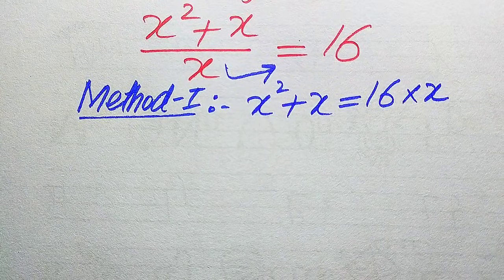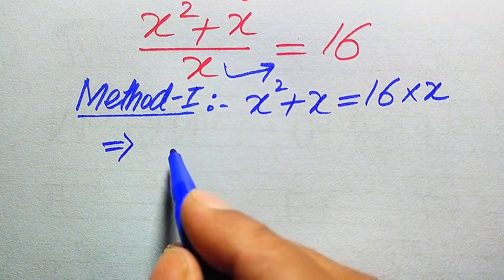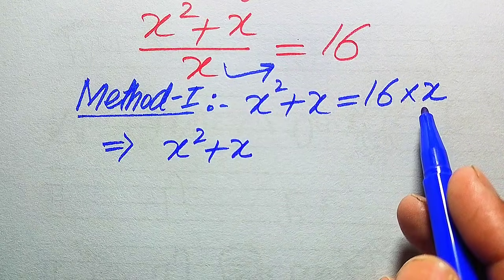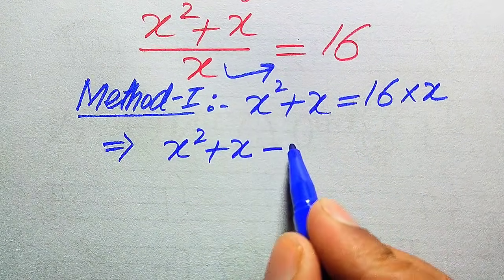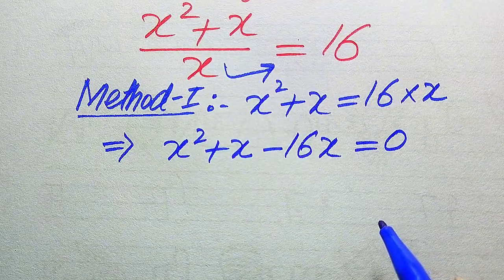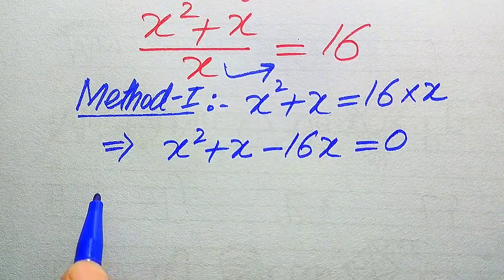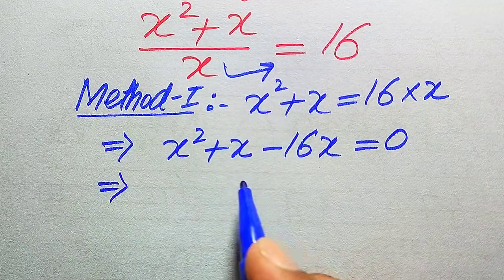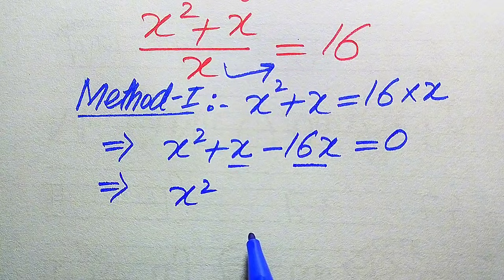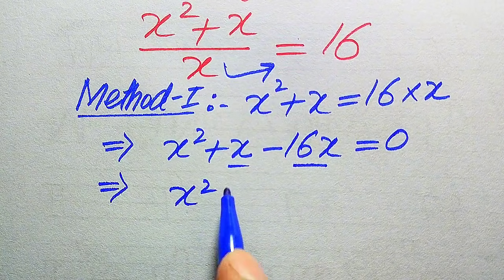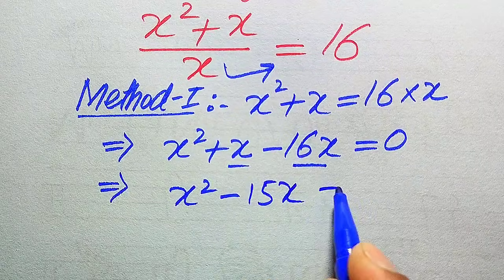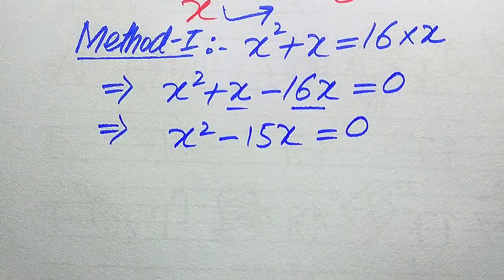In the next step, we move 16x from the right hand side to the left hand side, giving us x squared plus x minus 16x equals 0. Combining like terms, x minus 16x gives minus 15x, so the equation becomes x squared minus 15x equals 0.